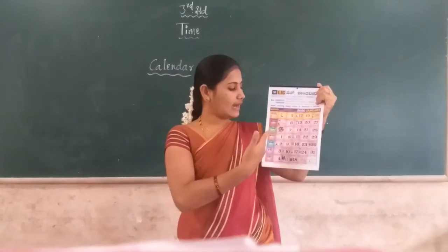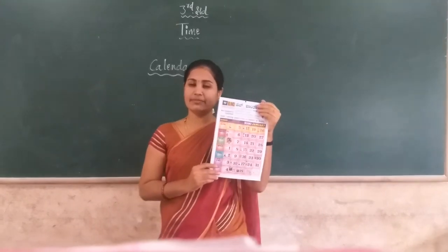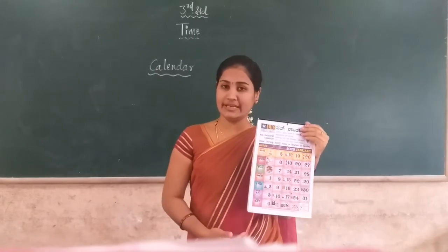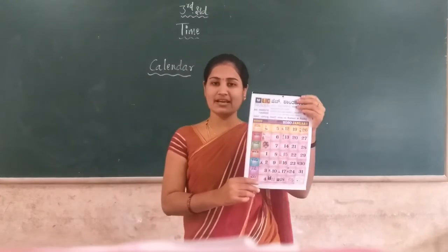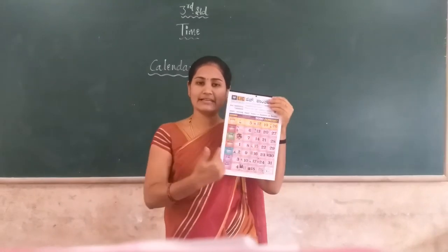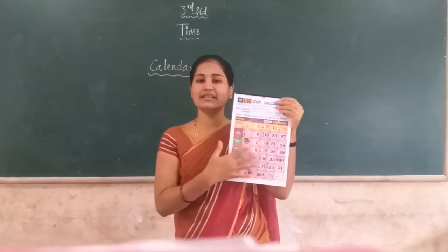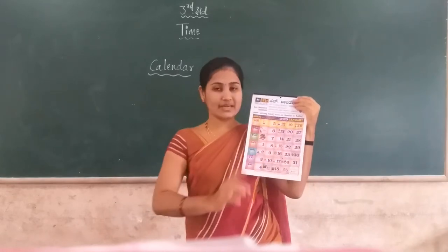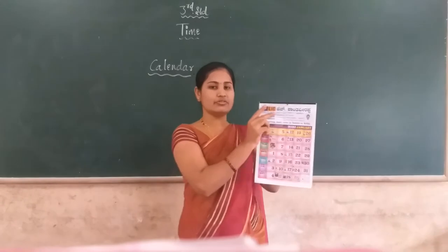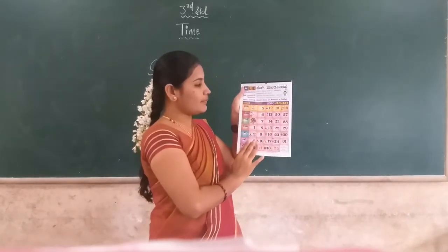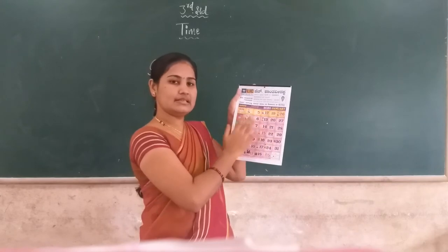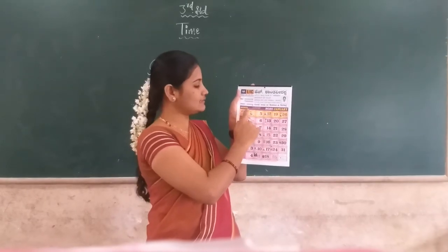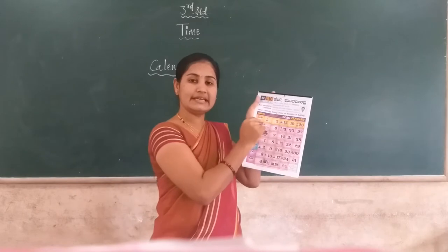The calendar has numbers. It stands from 1 to 30, 31, 28, or 29. The main page of the calendar has some numbers starting from 1 to 31. At the top of the calendar, January is shown — it indicates the month. 2020 is the year.